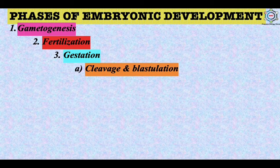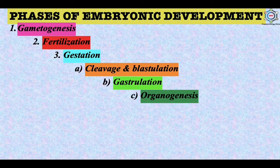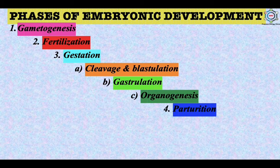During pregnancy, three sequential processes occur. First is cleavage and blastulation, where the rapid division of the zygote forms a multicellular body of cells known as blastomeres. Second is gastrulation, where movement of cells forms germ layers. Third is organogenesis — the differentiation of cells at specific places in the germ layer to form tissues, organs, and organ systems. After this, the last phase is parturition, which means the birth of the full-term young one.